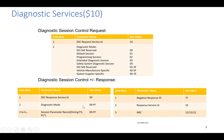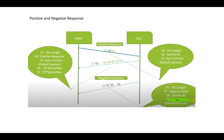If it is a negative response, it will be 0x7F — the negative response ID — followed by the service ID 0x10, followed by the negative response code (NRC), which will be 0x12, 0x13, 0x22, 0x78, etc.